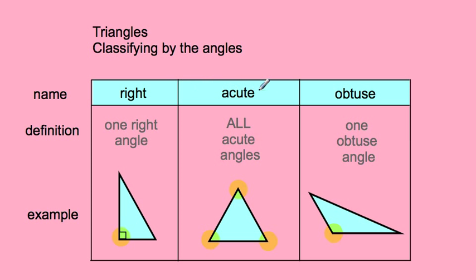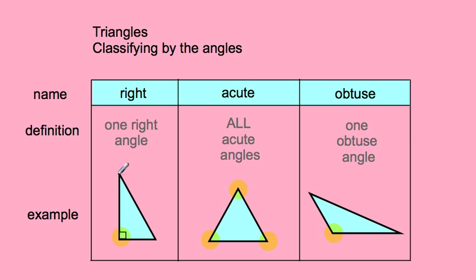These names correspond to types of angles — we're looking for a right angle, acute angles, and an obtuse angle. A right triangle is defined by having one right angle. In a triangle, you can't have two right angles — it's impossible. You'll see a little square corner most of the time, and you should be able to recognize a right angle. If you see one, you know you have a right triangle.